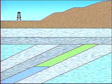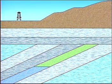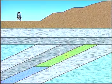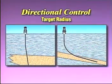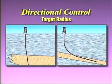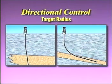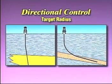Our goal in planning a well profile is to determine the most economic path from the surface to the bottom hole location. We first have to determine the target coordinates with respect to the proposed surface location. At the same time, we have to assign the target radius based on our well objectives. This target radius indicates how tightly we have to control the well trajectory.